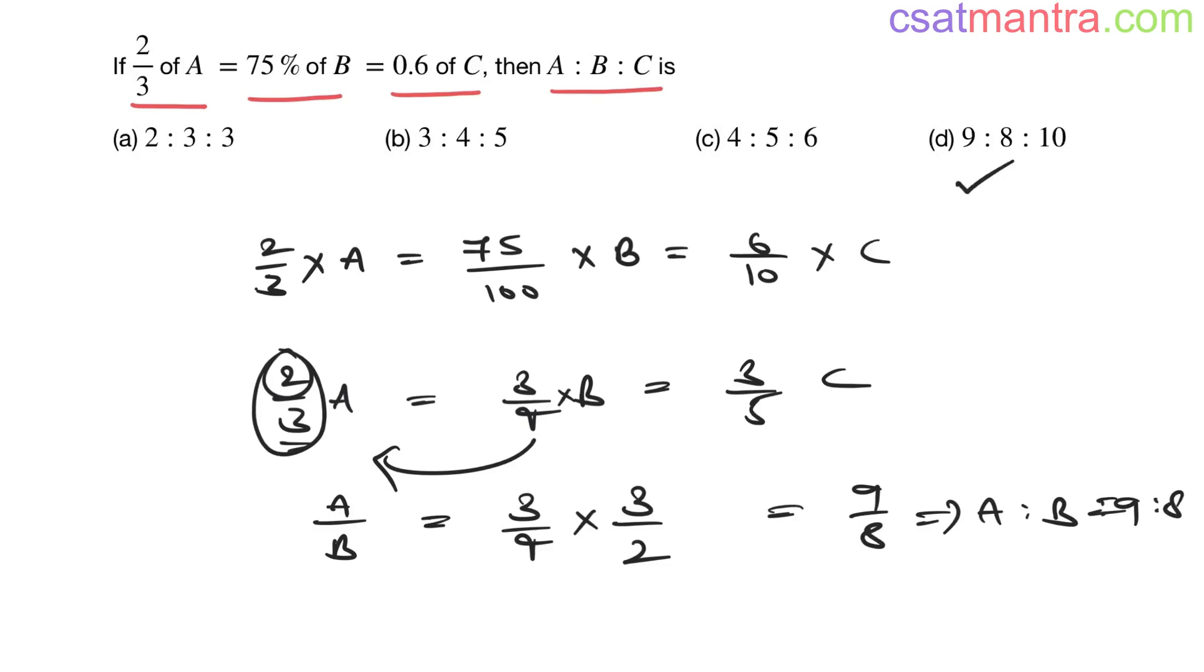Which option satisfies this? Option D from these two. 3×3 gets cancelled. B by C, you bring C this side. B by C is equal to 4/5. If you scale up, it's going to be 8 by 10. 8:10.